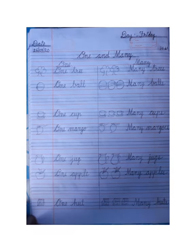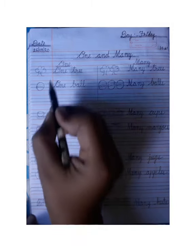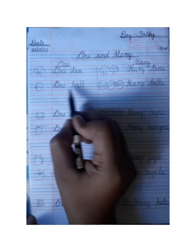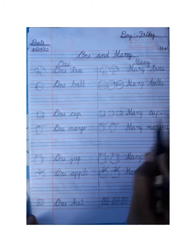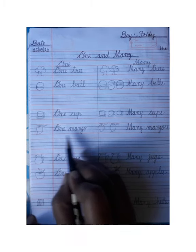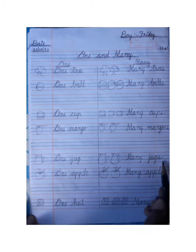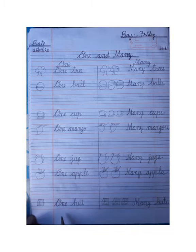I hope you all understood the difference between one and many. One means ek, many means ek se adik. One tree, many trees. One ball, many balls. One cup, many cups. One mango, many mangoes. One jug, many jugs. One apple, many apples. One hat, many hats.